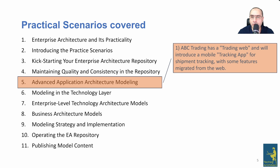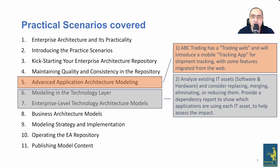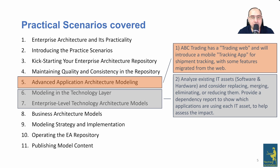The app is mainly a tracking application for their fleet and transportation, and it will also have some features from the web. The second scenario is to analyze existing IT assets — software and hardware — and consider replacing, merging, eliminating, or reducing them. This is sometimes called IT optimization and resource efficiency. It also covers providing a dependency report showing which applications are using each IT asset to assess impact, which is a very common practice for enterprise architects.